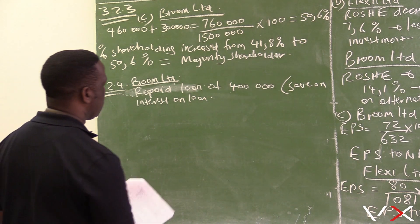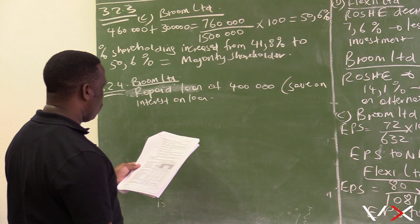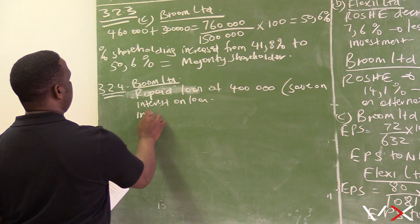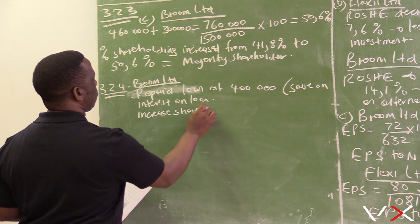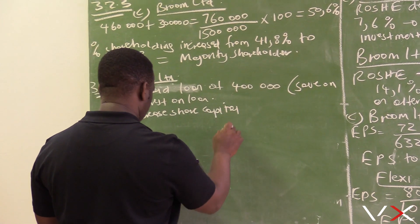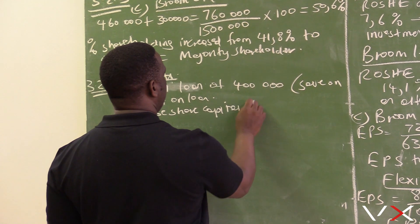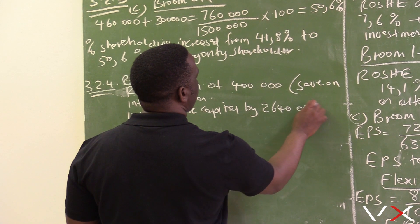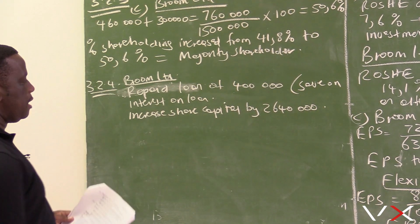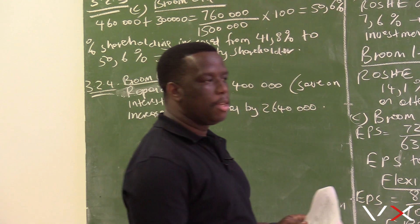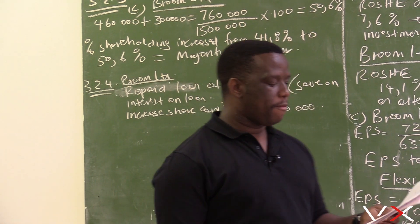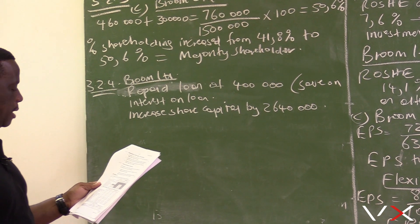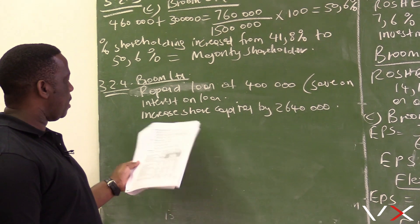The repayment of the loan will benefit the company because the company will save on interest on the loan. Another decision taken by Broom Ltd was to increase the share capital by 2 million 640,000, which will make more funds available for the operation of the business.